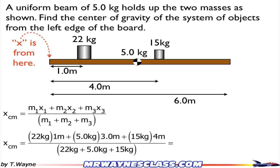Putting in my numbers, the 22 kilograms is one meter from the left, five kilograms is three meters from the left, 15 kilograms is four meters from the left, and then I divide that by the sum of all the masses. And when I do the math, I get 2.3 meters from the left edge because that's where all my distances were measured from. So the center of mass for these three objects is located 2.3 meters from the left edge of the board.